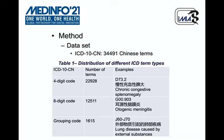Let's look at some details of the ICD-10CN. This table shows some examples of the four-digit code, six-digit code concepts, and the grouping concepts.